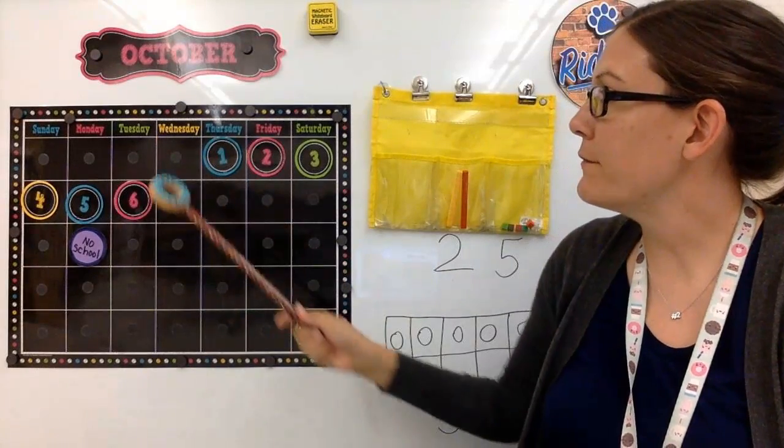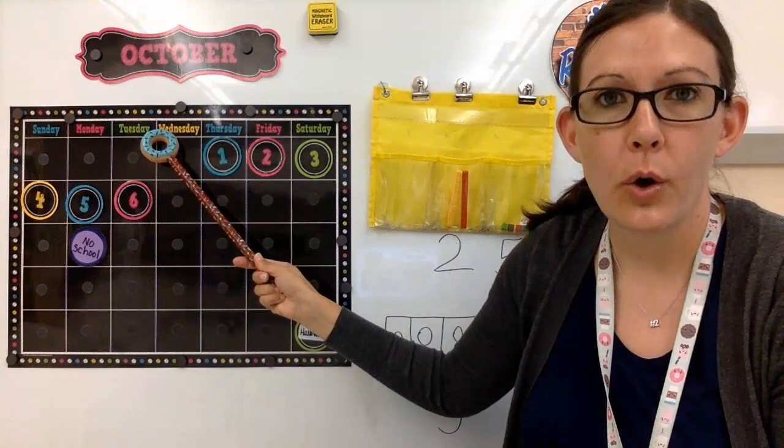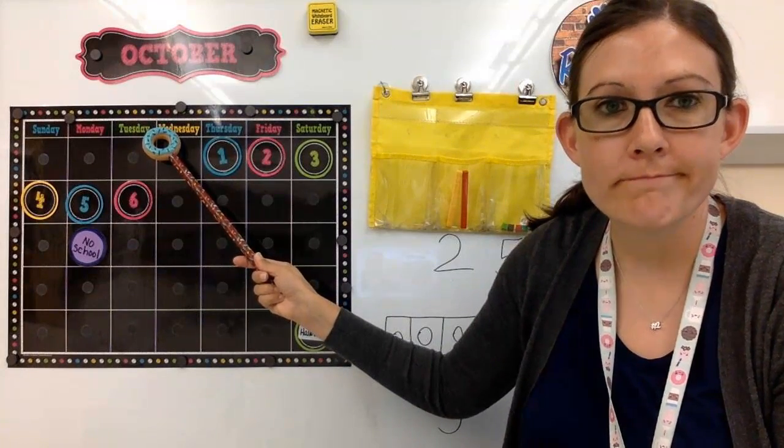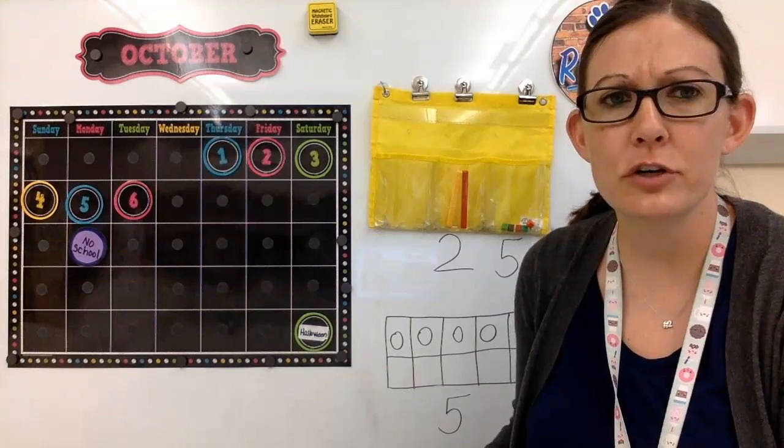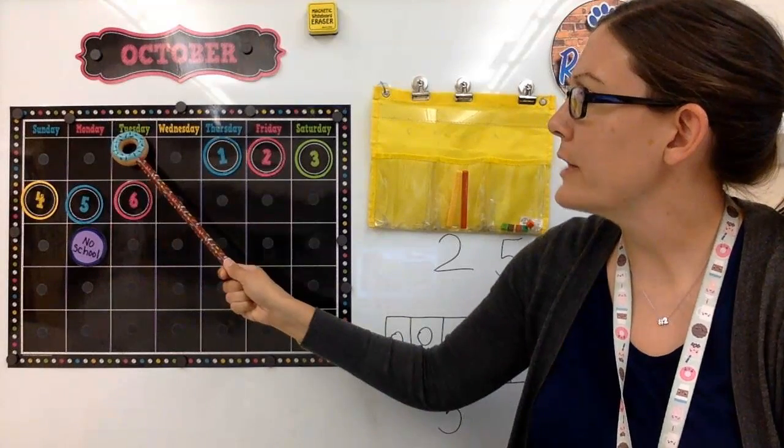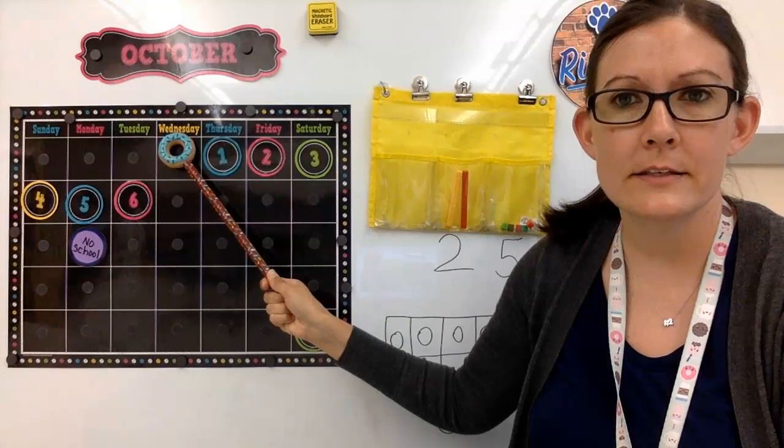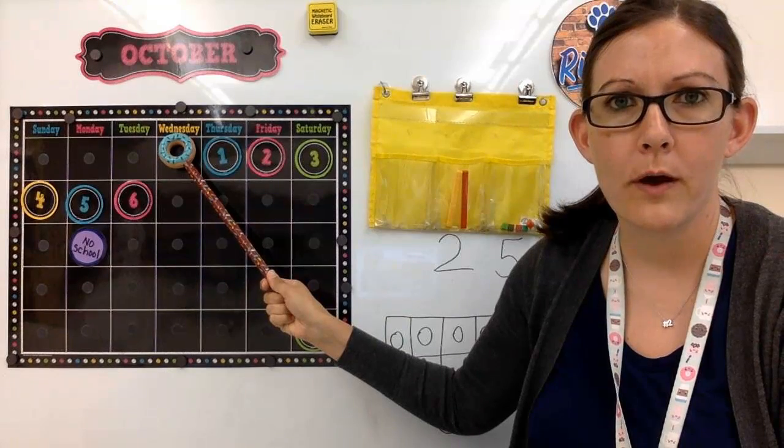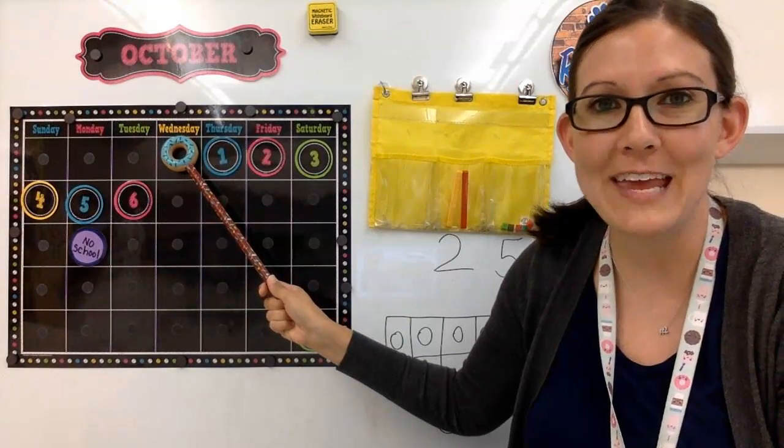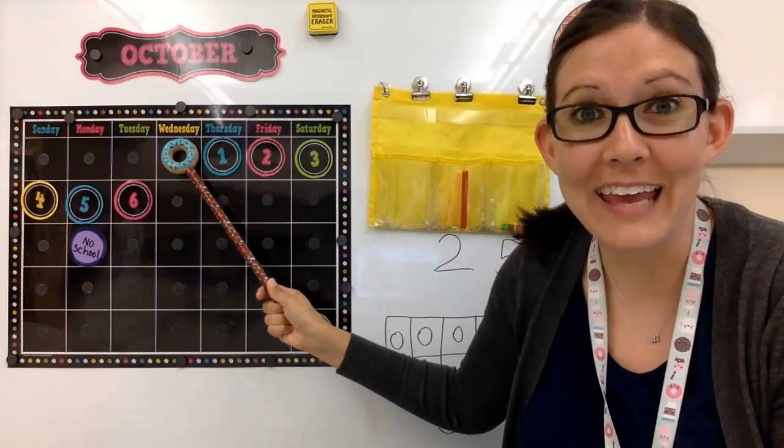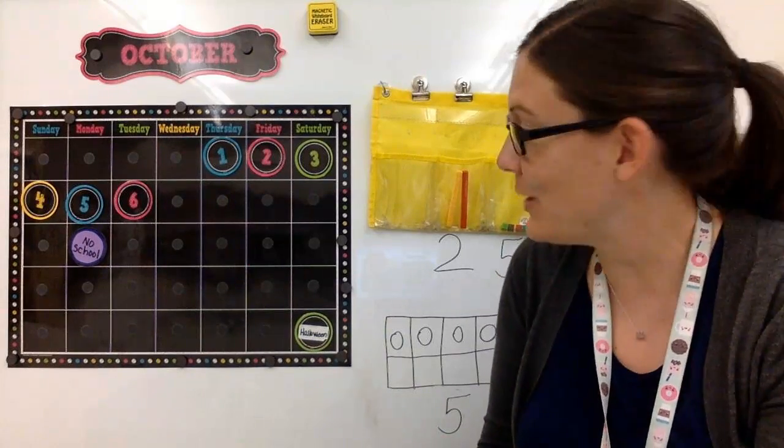So this is a day of the week that starts with W. And it's the day that comes after Tuesday. Yesterday was Tuesday. Today is W. Are you saying Wednesday? You're right! Good job! Today is Wednesday.